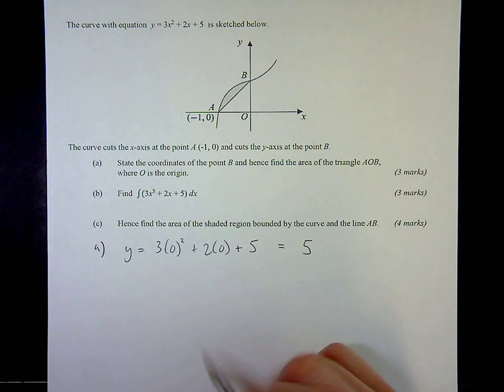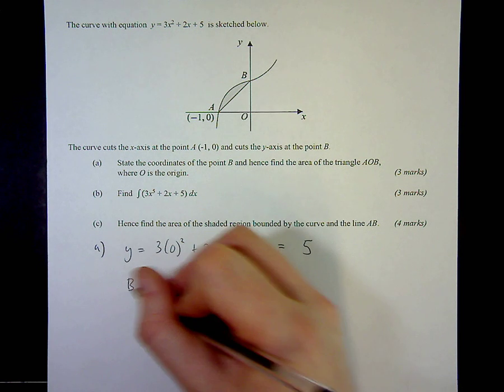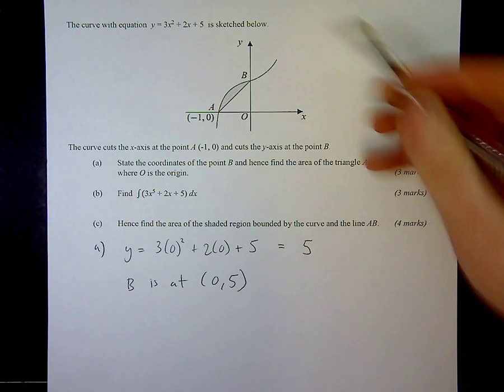It does say state the coordinates of the point B, so we need to be specific that B is at (0, 5), where it's going to cut the y-axis.